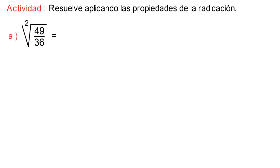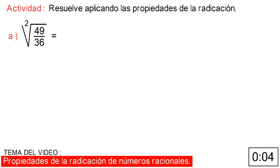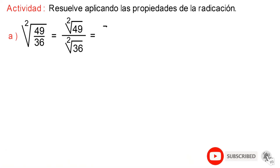Literal A: √(49/36). Here we apply the properties. √(49/36). Then, calculating both roots, the final result would be 7/6.